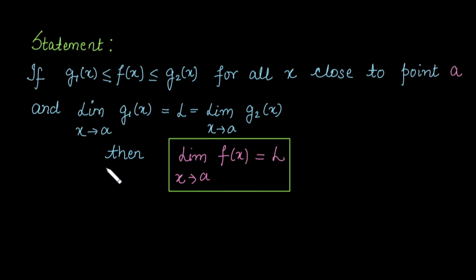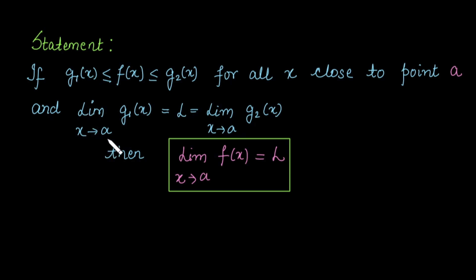The statement of the theorem: we have three functions — the original function f(x), and we find two functions g1 and g2 such that g1 ≤ f(x) ≤ g2 near the required point. As x tends to that point a, both g1 and g2 approach some value L. In this case, we can conclude that the limit of f(x) at that point a is also equal to L.